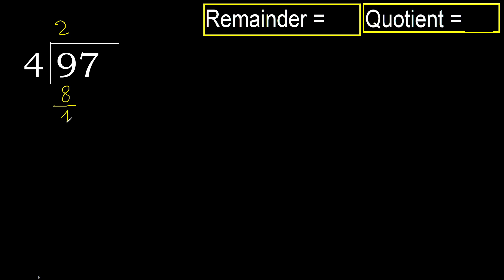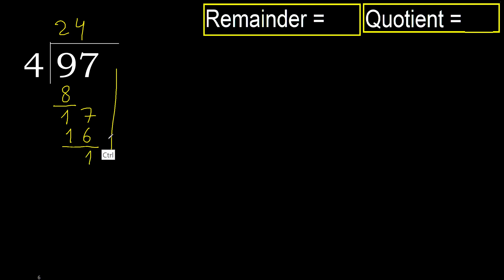9 minus 8 is 1. Bring down: 17. 4 multiplied by 5 is 20 — greater. 4 multiplied by 4 is 16 — 16 is not greater. Subtract: 1. There is no number remaining, so finish it: remainder 1.